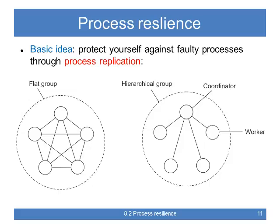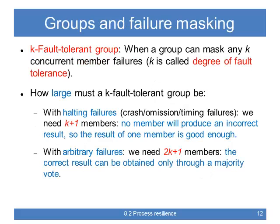Let's move on to process resilience. The basic idea is: how do you protect yourself against faults? You replicate stuff. There are basically two methods for replicating processes. A flat group — symmetric — is just a bunch of processes operating together, often in a lockstep mode using active replication. You can also have hierarchical groups with a coordinator and workers, which is essentially the primary-backup approach. Both are used.